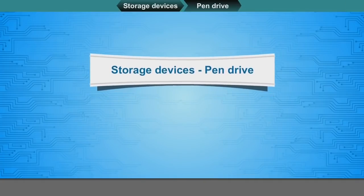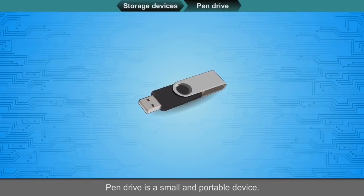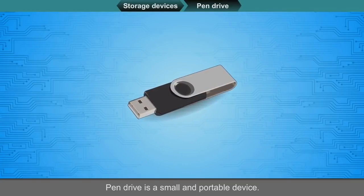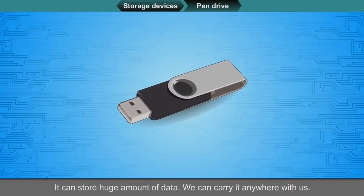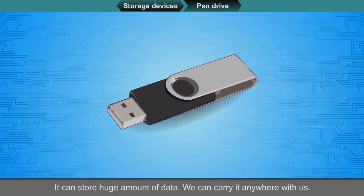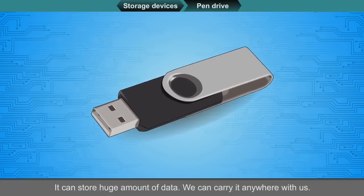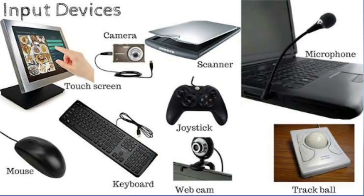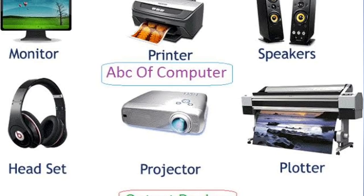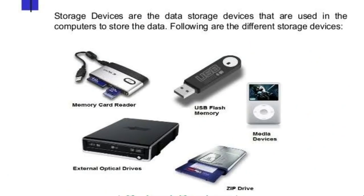A pen drive is a small and portable device. It can store a huge amount of data and we can carry it anywhere with us. So children, here we come to the end of this video. I hope you all understood the three main sections of computer parts: input devices, output devices, and storage devices. Thank you, children.